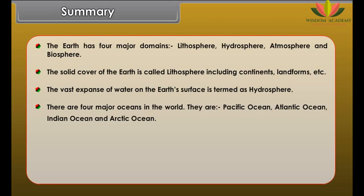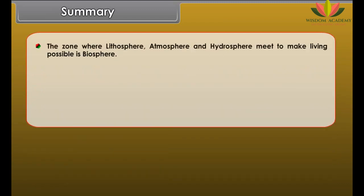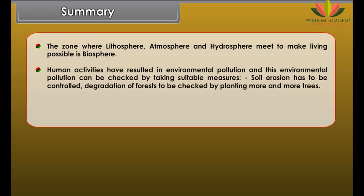The rapid increase in population has resulted in the depletion of soil, minerals and forests. Forests have been cleared for settlement and cultivation. Other human activities have resulted in air and water pollution. Thermal power plants and other factories emit smoke which pollutes rivers and lakes. Our environment is being degraded by various human activities. Environmental degradation can be checked by controlling soil erosion and by planting more and more trees to check degradation of forests.